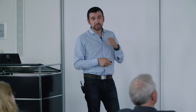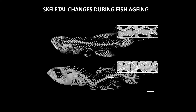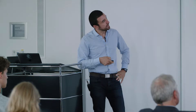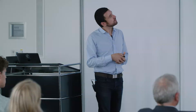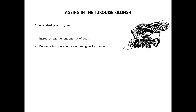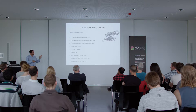This is a skeletal prep done together with Bjorn Busse at the University of Hamburg. This is a young killifish and this is an old killifish — you can see a very strong spine curvature happening with age spontaneously, and also a loss of mineral density with age. There are several other phenotypes that change with age: behavior changes, learning performance decreases, cellular senescence, neurodegeneration, sarcopenia, loss of fecundity in both sexes, neoplasia — cancer is very prevalent in killifish — and reduced regenerative capacity.